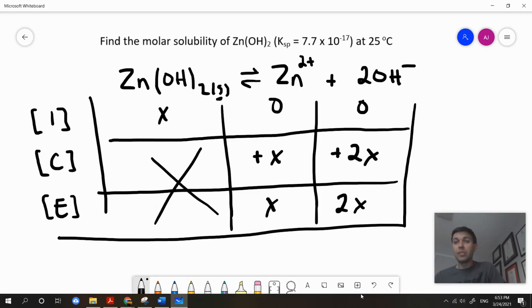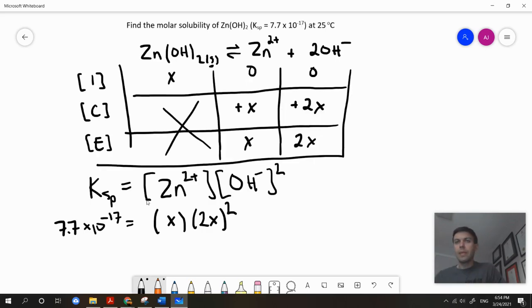Here are my equilibrium concentrations, x and 2x. So, now we're going to substitute those into the Ksp equation. Ksp equations are simpler than a lot of the equilibrium equations we've looked at previously. However, one thing you have to remember is the order of operations.